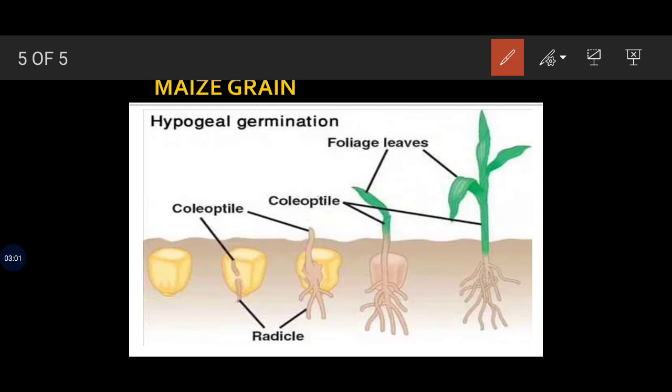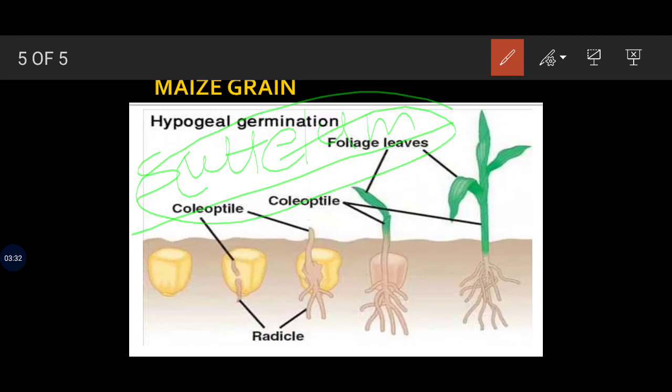The cotyledon present in maize grain, or in any monocot seed, is the scutellum. I hope you can remember this term - we discussed scutellum two or three days back. Scutellum surrounds the growing embryo and absorbs its nutrition from the endosperm.